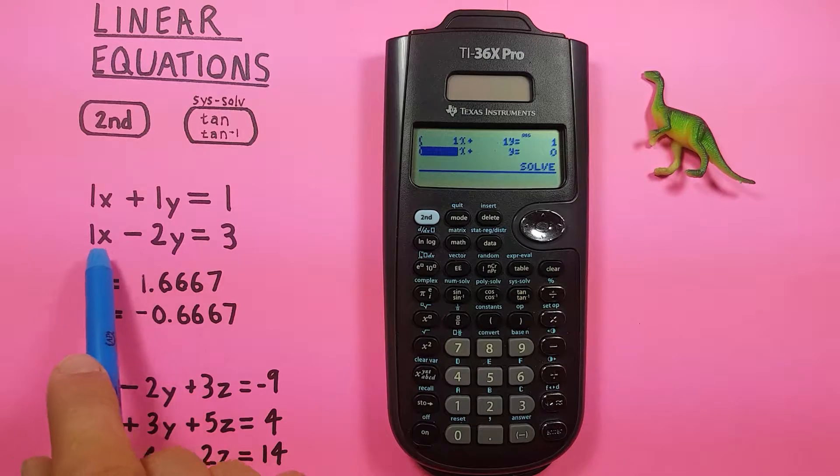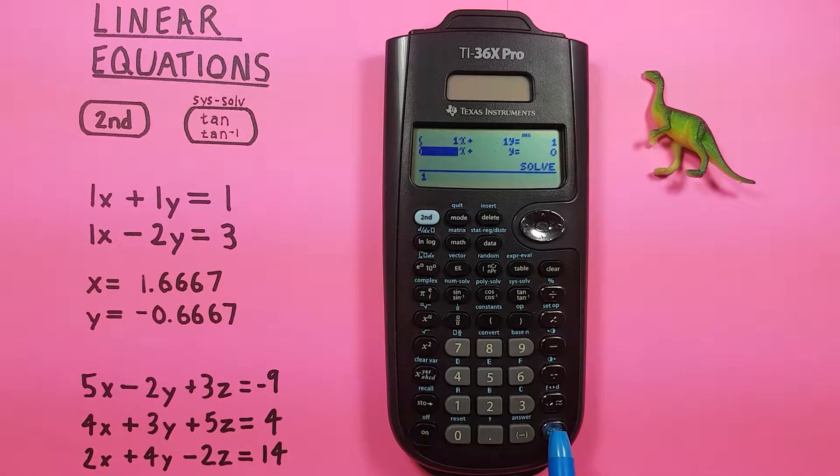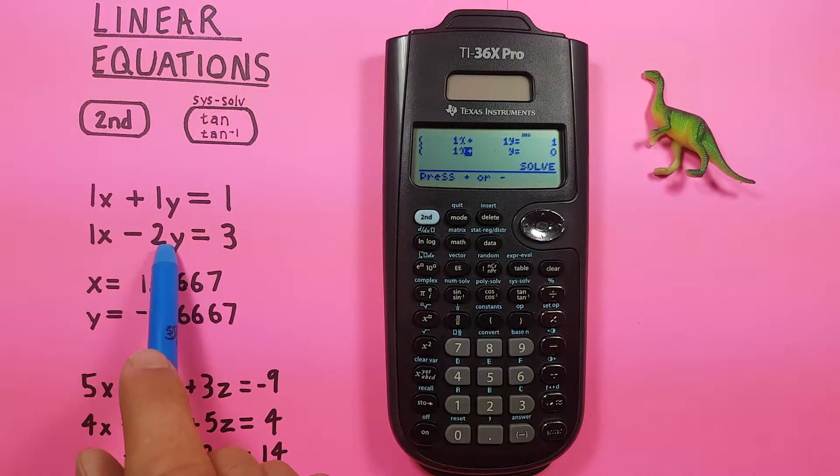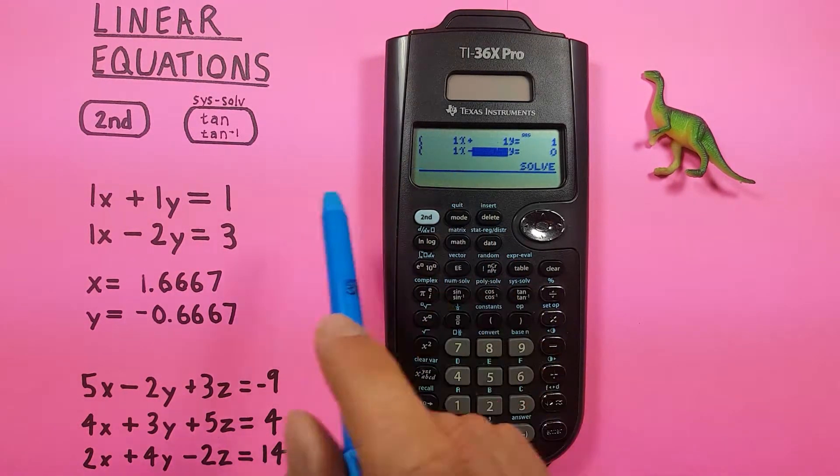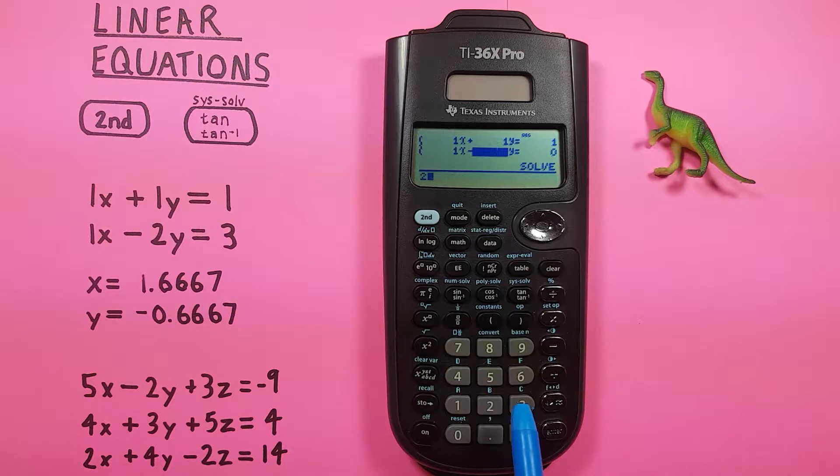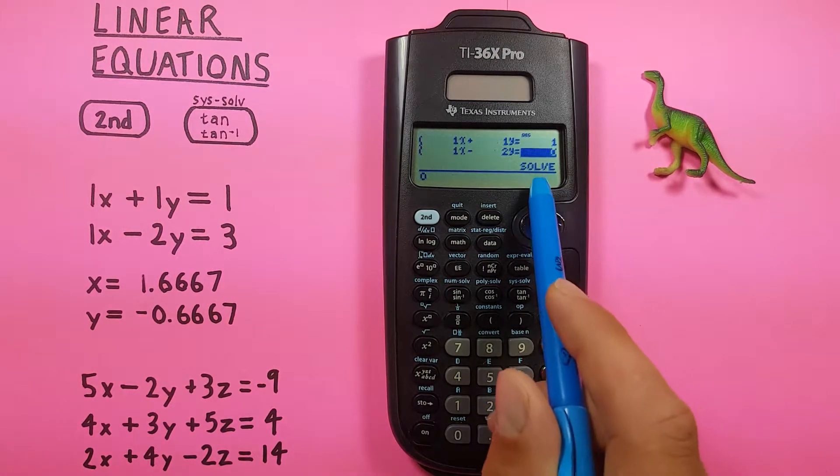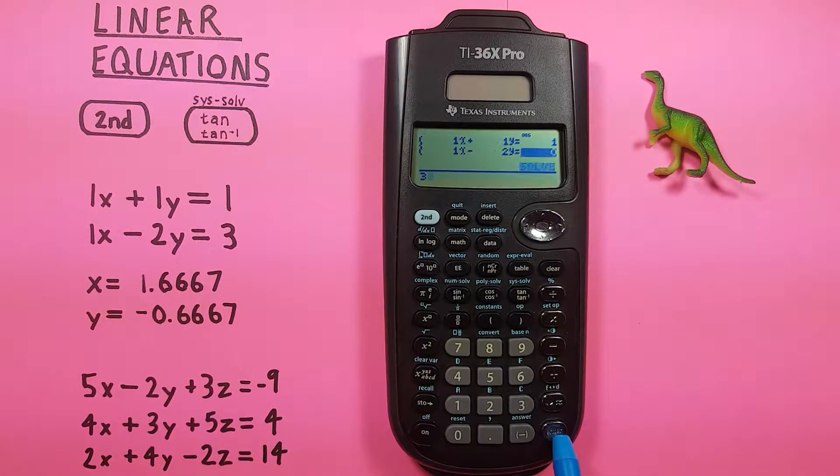And our next equation, 1X. And now here we go, minus 2Y. So we need to change this to a negative with a minus key. And then 2Y, 2, there we go, equals 3. And there we have our two equations.